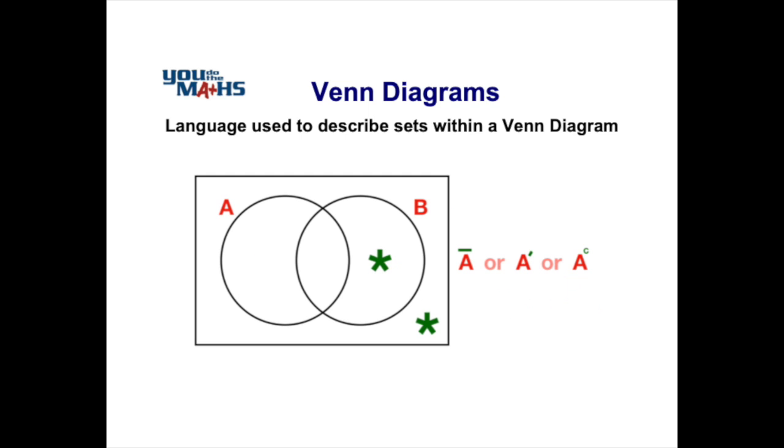Other set notation that you may see refers to complements. In this case we've got the complement of A. It's basically everything inside the Venn diagram that's outside of set A, and we've shown that again with the asterisks.